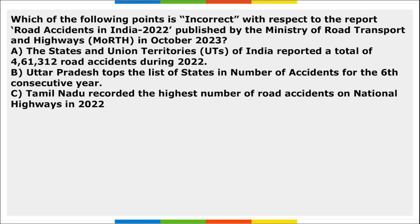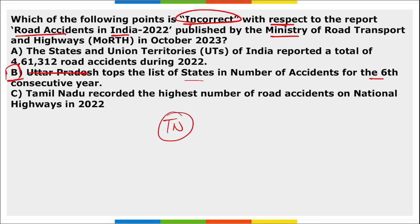Which among the following is incorrect about the Road Accidents in India report published by the Ministry of Road Transport and Highways? Option B is incorrect — it states UP tops the list for maximum accidents for the sixth consecutive year. Actually, Tamil Nadu topped the list for the fifth consecutive year. Tamil Nadu also recorded the highest number of road accidents on national highways.